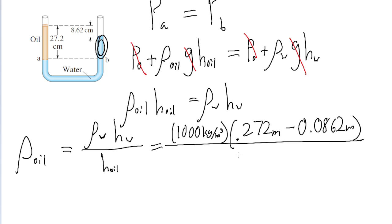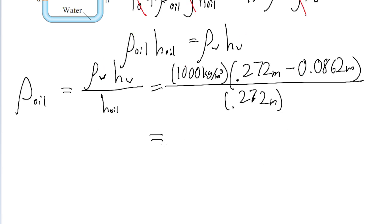And we divide this by the height of the oil, which is, again, just 27.2 centimeters or 0.272 meters. So we put this into a calculator, and then we find the density of oil as 683 kilograms per cubic meter.